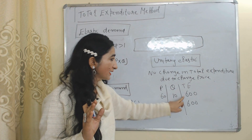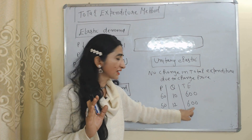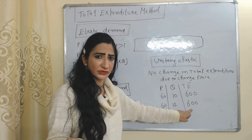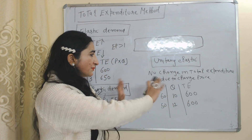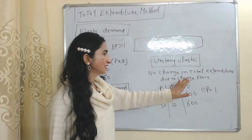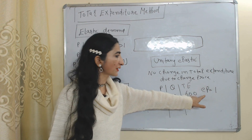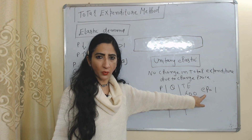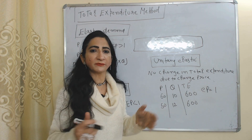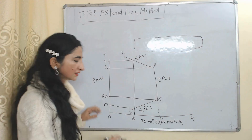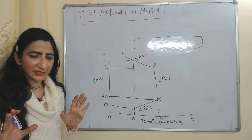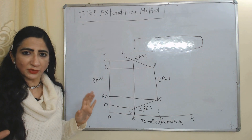The third case is unitary elastic demand. When price falls from 60 to 50, demand increases from 10 to 12, but total expenditure remains the same — it was 600 and it is still 600. That means a change in price does not affect total expenditure. In the case of unitary elastic demand, price elasticity of demand is equal to 1, because change in price will not affect total expenditure.